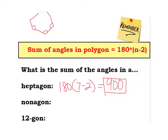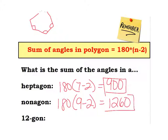Let's try a nonagon. If there are 9 sides, that's going to be 180 times (9 minus 2). So in your calculator you type 180 times 7, and that ends up being 1260. The more sides you have, the wider open these angles get and the more of them there are, so that sum starts to increase as you have more sides. Now you try the 12-gon: what's the sum of all the angles in a 12-gon?